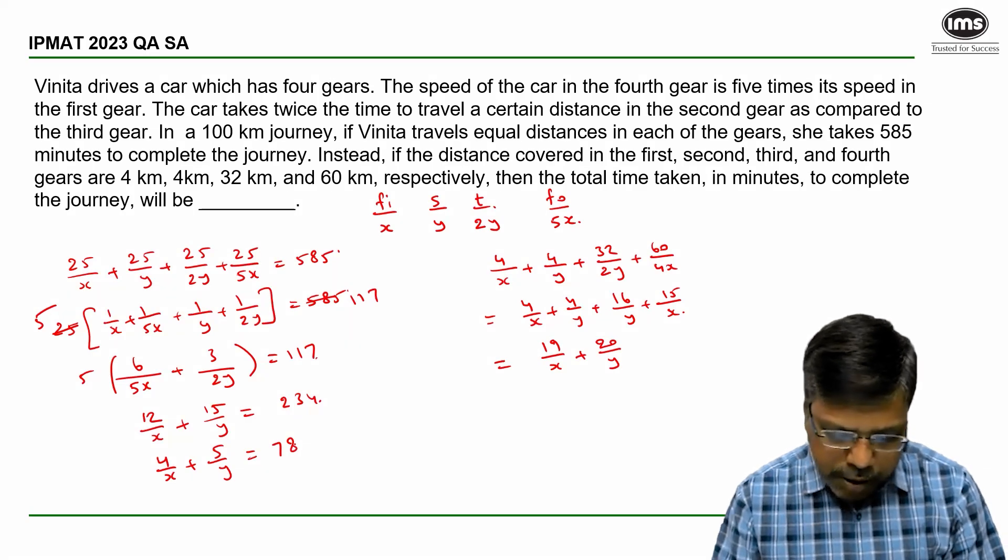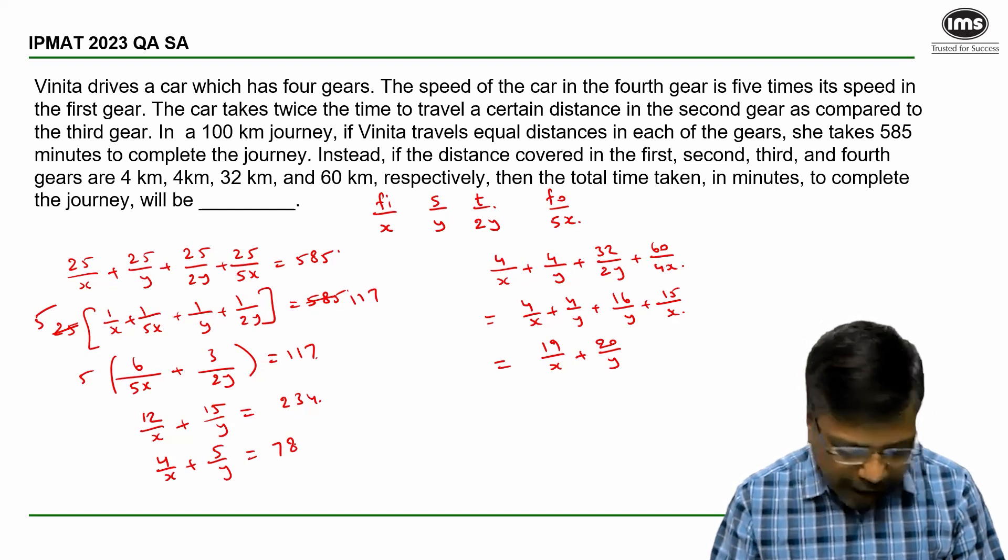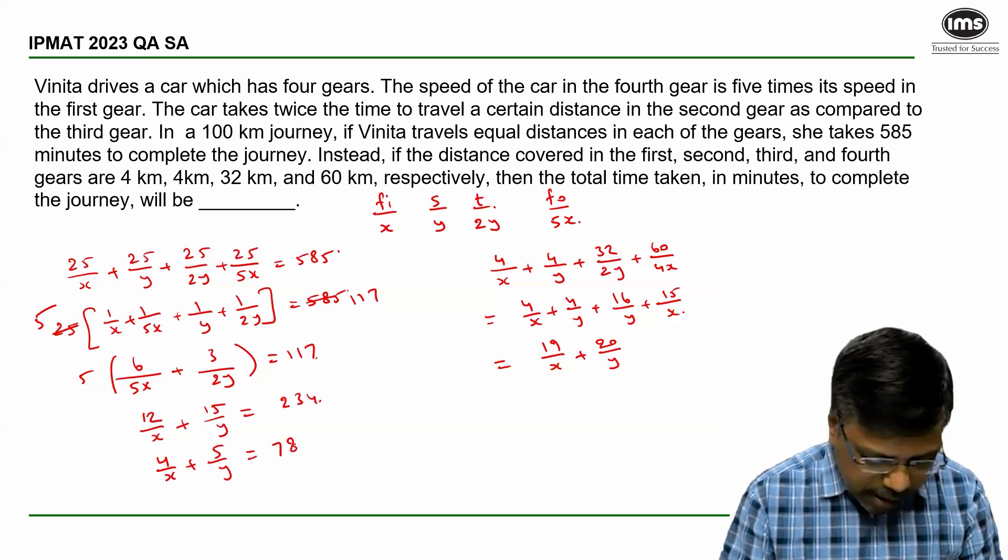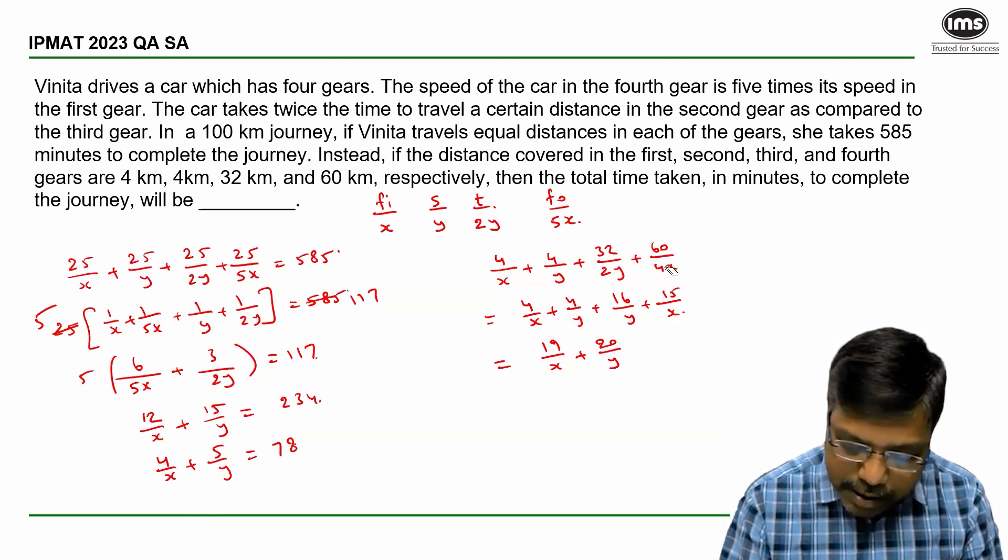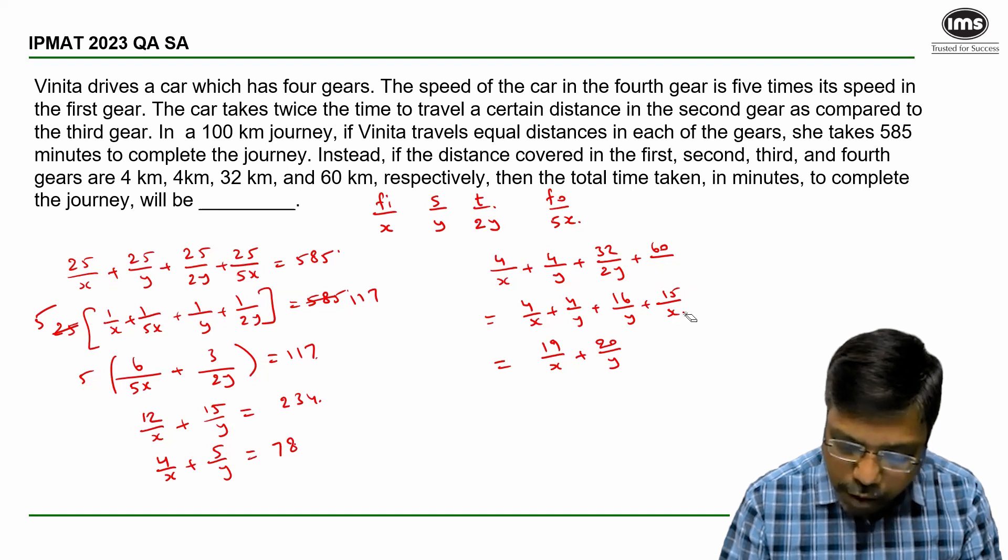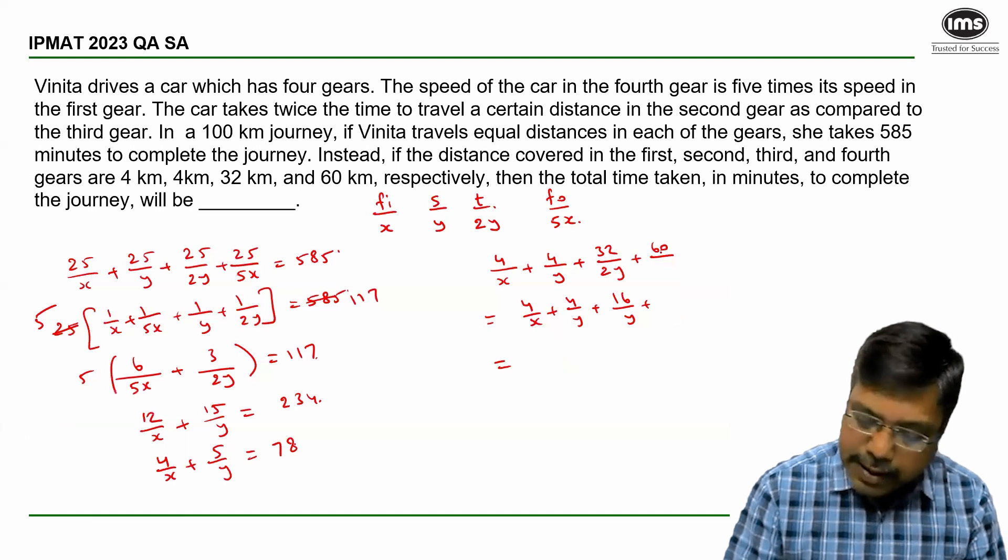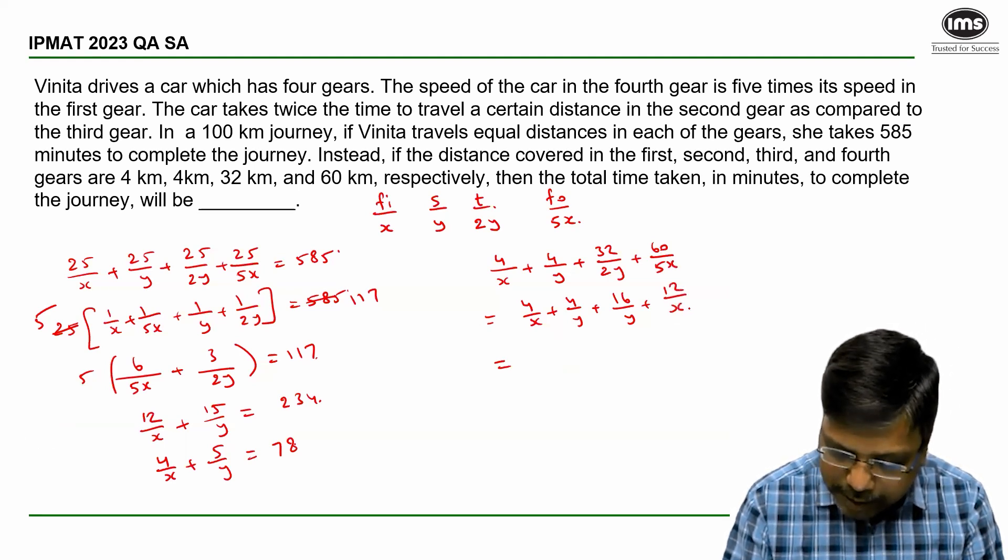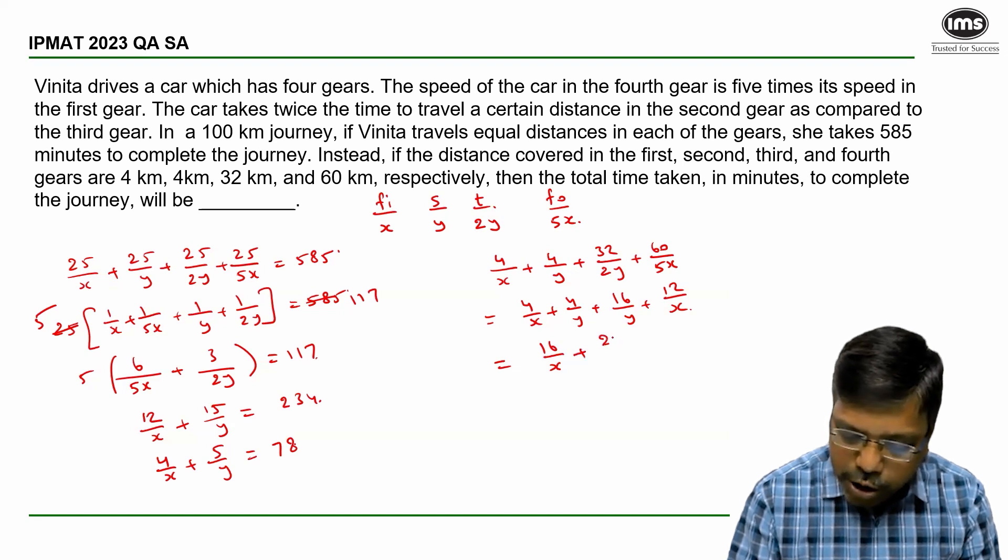Now 4 kilometers, 32, 60. Did we get it right? Let's check once again. Oh, 60 by 5x. There is a small correction that we need to make here. So in the second case, fourth gear distance is 60. So time taken is 60 by 5x. So once I rectify this, this will be 12 by x. So 4 plus 12 by x is 16 by x and 4 plus 16 by y is 20 by y, which can be written as 4 into 4 by x plus 5 by y.